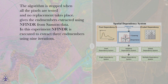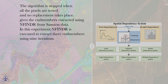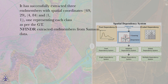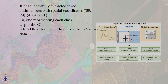N-FINDR is executed to extract 3 N-members from the Samson dataset using 9 iterations. It has successfully extracted 3 N-members with spatial coordinates (69, 29), (4, 84), and (1, 1), representing each class as per the ground truth. N-FINDR extracted N-members from Samson data are shown here.